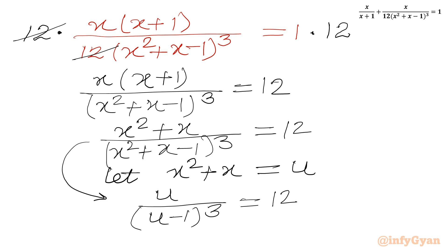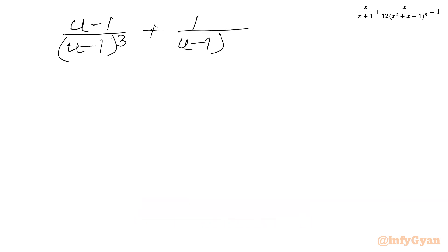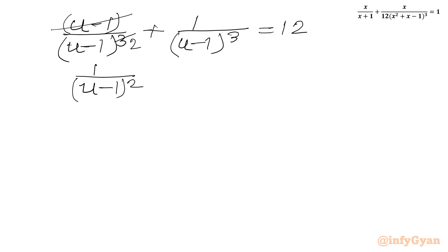Now I will subtract and add 1 in the numerator, and split it with respect to u minus 1 and plus 1. So I can write (u minus 1) over (u minus 1) cubed plus 1 over (u minus 1) cubed equal to 12. Canceling one (u minus 1) from the first term gives 1 over (u minus 1) squared plus 1 over (u minus 1) cubed equal to 12.